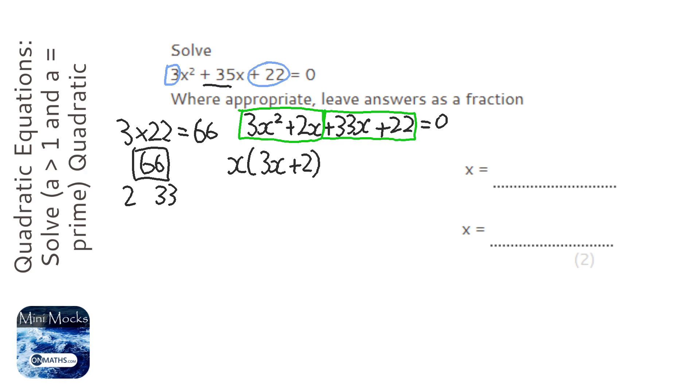And looking at the next two, so I'm going to factorise these two, and I can get 11 out. So plus 11 brackets 3x plus 2.